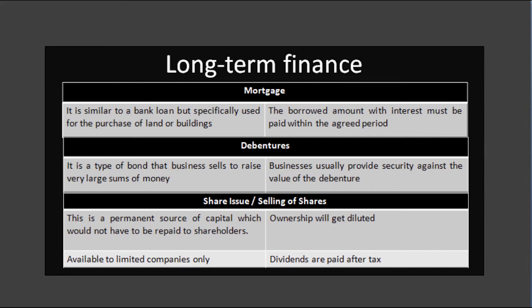Now let's move on to the last source under long term finance: the issue or selling of shares. This source of finance is only possible for limited companies. It is a permanent source of capital which does not have to be repaid to shareholders, and no interest has to be paid. However, dividends are paid after tax whereas interest on loans is paid before tax. The ownership of the company could change hands if many shares are sold. Only public limited companies can offer shares for sale to the public.